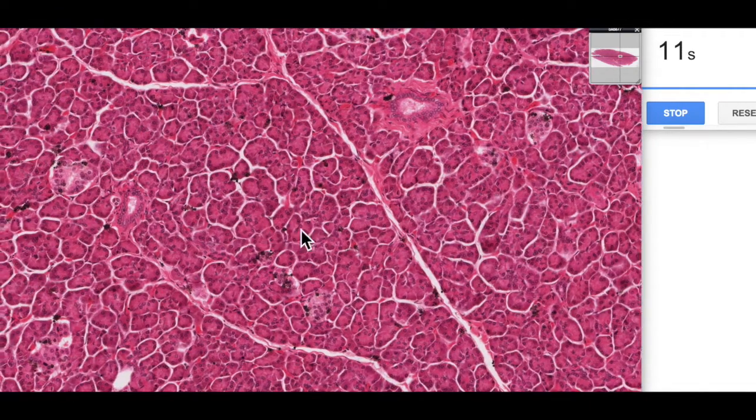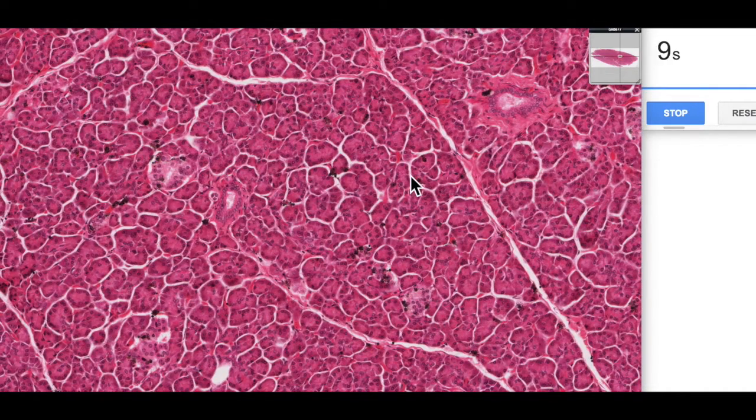So that was just an overview. There's another nice little duct. That was just an overview of the pancreas, the endocrine and exocrine portions and I hope you found that useful.